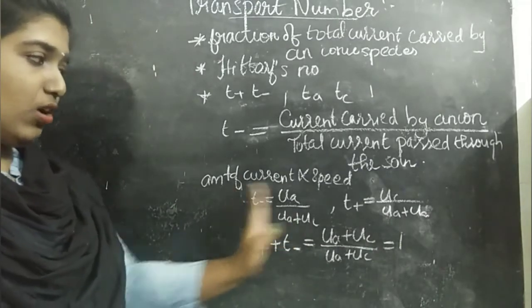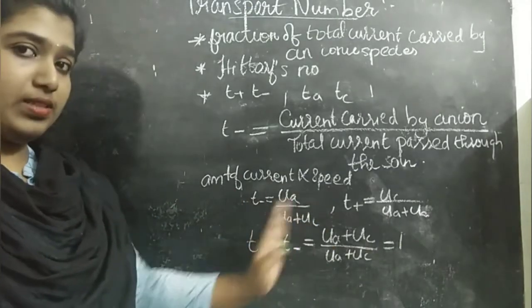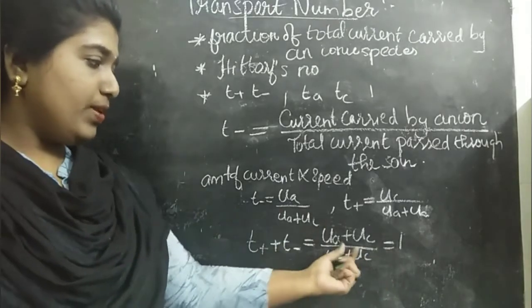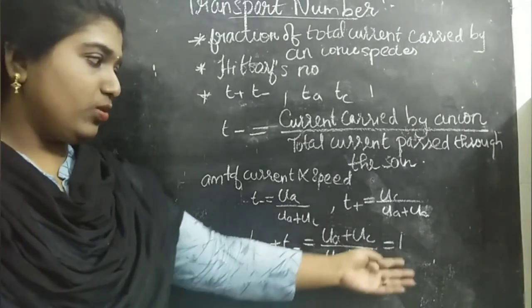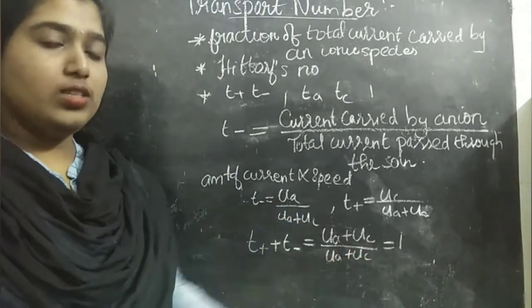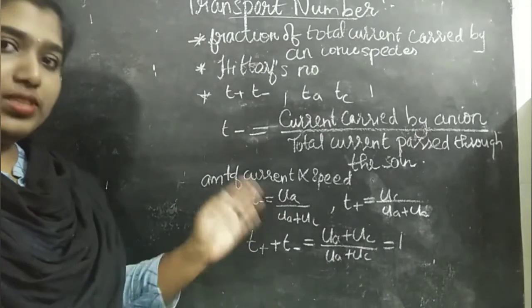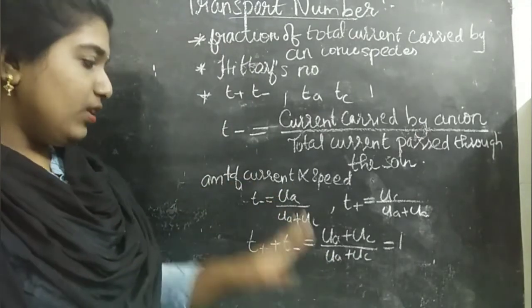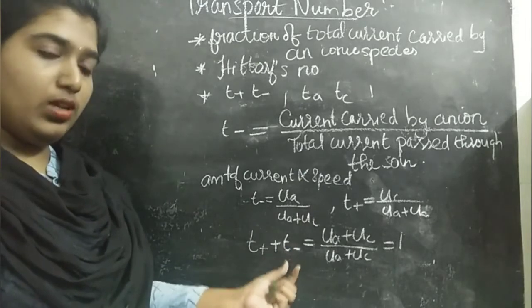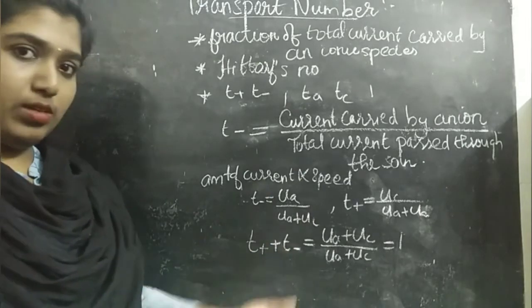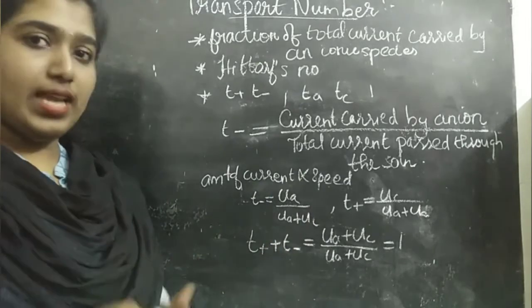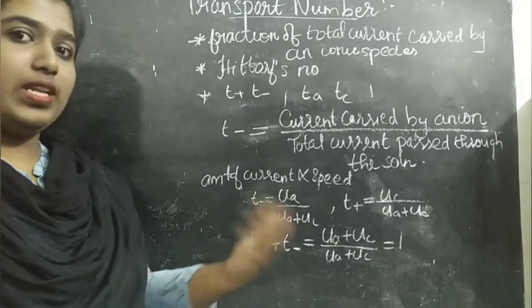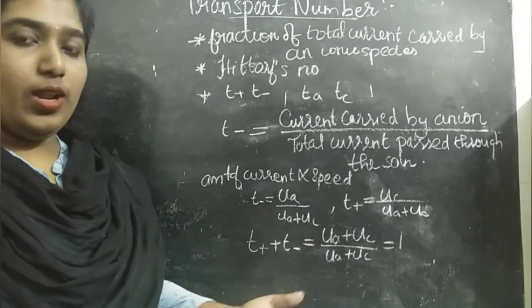Adding T+ and T−, we get (Ua + Uc) / (Ua + Uc), which equals 1. This means the sum of the transport numbers will always be unity. If the transport number of the anion is known, we can calculate that of the cation, and vice versa.